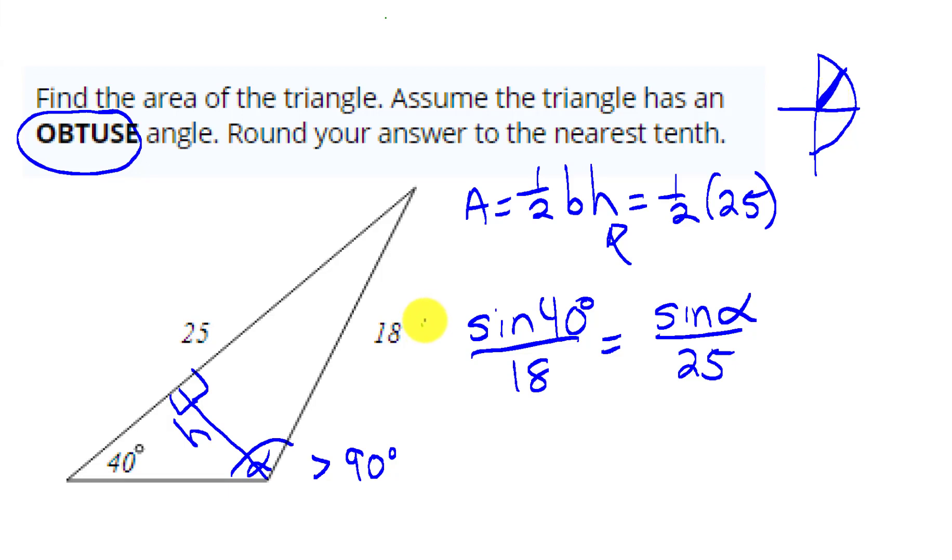Let's go ahead and first find that acute angle. We're going to multiply both sides by 25 here, and then we're going to grab the calculator. Alpha is going to be the inverse sine of 25 sine 40 degrees over 18. Let's put that in the calculator.